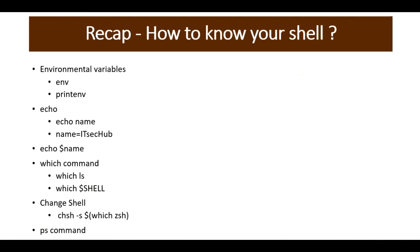Let's recap what we have learned so far. We learned about the shell and how to find the path for the shell program. We learned about environment variables and how to print their values, the echo command and how to print and assign variable values, and the which command to print the path of a command and identify the default shell. We also learned how to change the default shell program using the chsh command, and the ps command to identify currently running processes and the active shell. In part 2 we will start from the basic commands of Linux. Stay tuned with ITSecHub and please subscribe for more new videos.